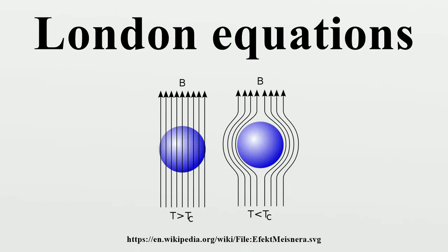The London equations, developed by brothers Fritz and Heinz London in 1935, relate current to electromagnetic fields in and around a superconductor, arguably the simplest meaningful description of superconducting phenomena. They form the genesis of almost any modern introductory text on the subject.